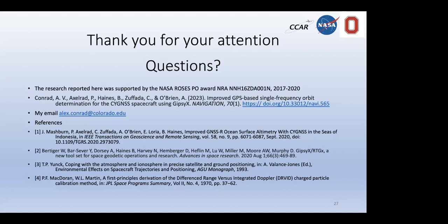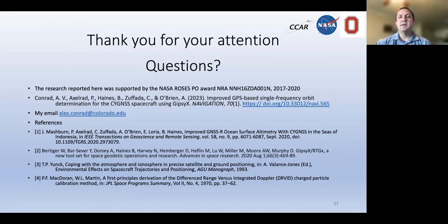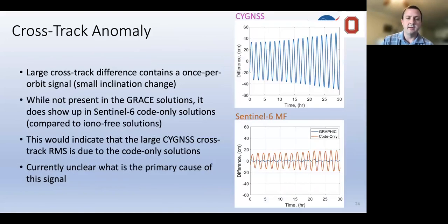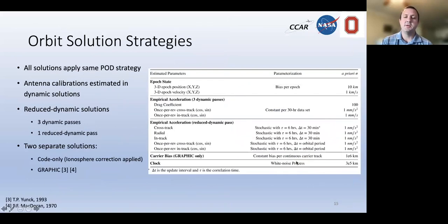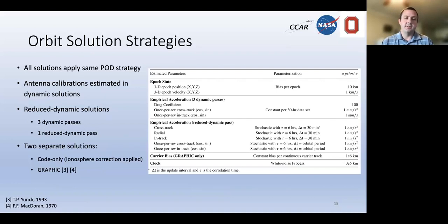A question asks about whether N/2 remains an integer in GRAPHIC. Since we aren't doing integer ambiguity resolution, we estimate a constant bias per continuous carrier track. The half-integer value gets absorbed within that constant bias, which is not constrained to be an integer — hardware delays can also be absorbed there as well.